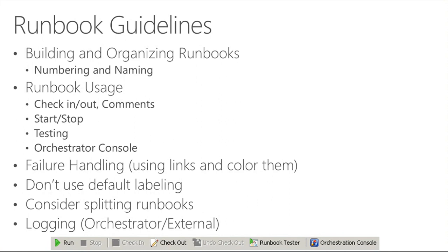Error handling is a great example of splitting runbooks. You can create one generic error-handling runbook that accepts parameters like an error code and error text, then creates an incident in Service Manager — and call that runbook from all your other runbooks to make error handling happen in a very consistent way. You are also able to use logging, both within Orchestrator and externally, to find out the status and to troubleshoot problems with your runbooks.